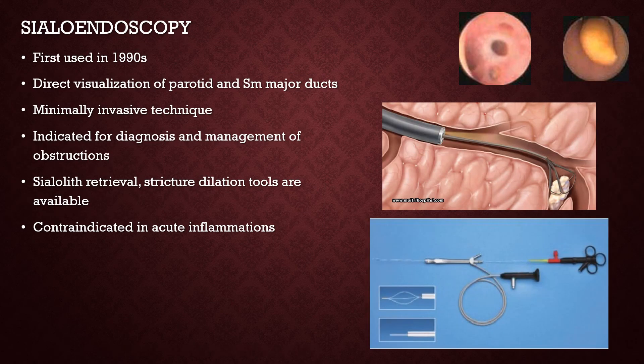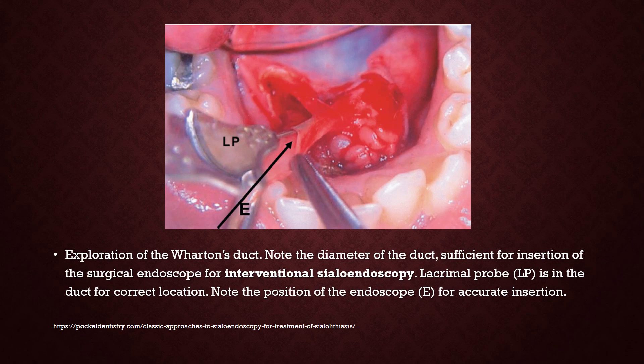Sialoendoscopy was first used in the 1990s and is slightly different from sialography. It involves direct visualization of the parotid and submandibular major ducts and is minimally invasive. It is indicated for diagnosis and management of obstruction within the ductal system. Retrieval and stricture dilation tools are available which can help to retrieve stones causing obstruction. Sialoendoscopy is contraindicated in acute inflammations. A lacrimal probe is used in the duct for correct location and accurate insertion of the surgical endoscope.